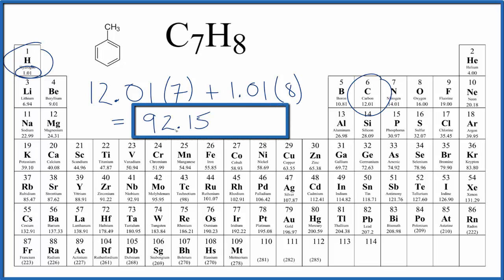That gives us 92.15, and the units, grams per mole. My periodic table rounds to two decimal places. If you have more or fewer decimal places, you might get a slightly different answer out here.